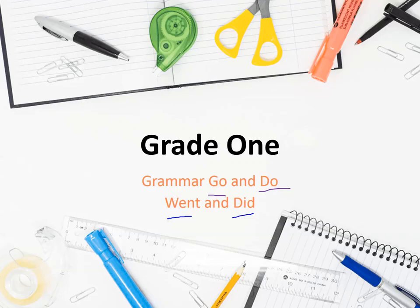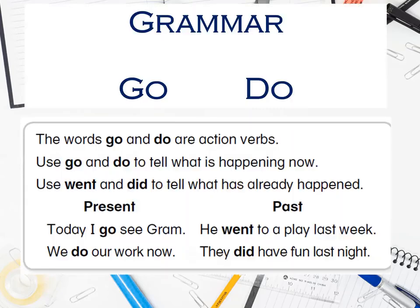Let's say it again: 'go' is in present, 'went' is in past, 'do' is in present, and its past tense is 'did.' Great! Now, the words 'go' and 'do' are action verbs. We use 'go' and 'do' to tell what is happening right now, in the present.